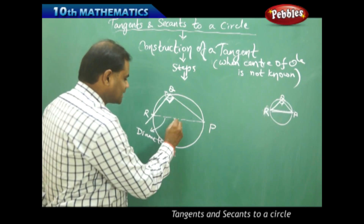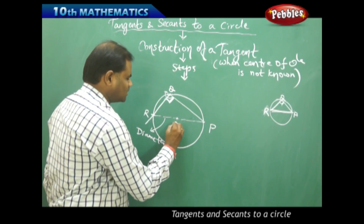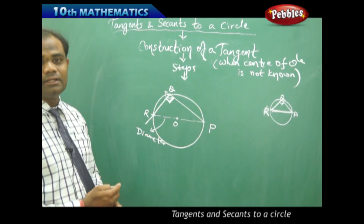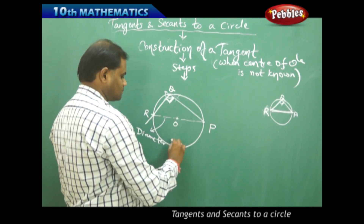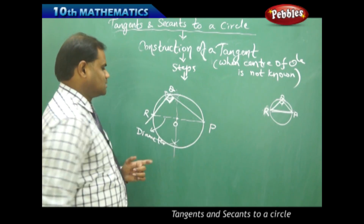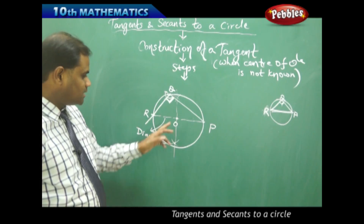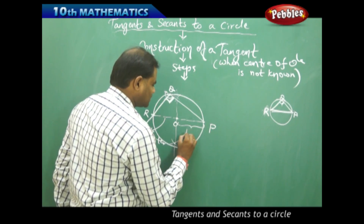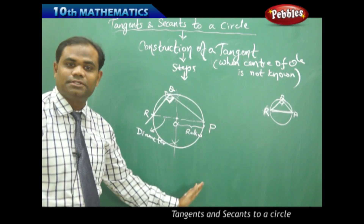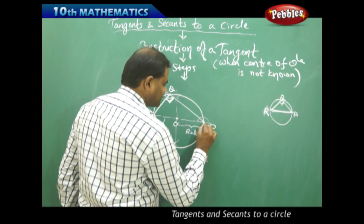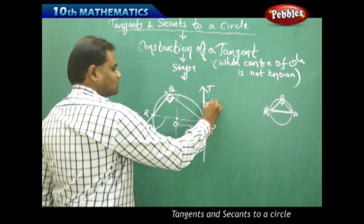Now, PR being the diameter, I find the exact middle of PR by taking more than half the measurement with a compass and constructing the perpendicular bisector. This gives me the center of the circle, which I call V. With center V known, VP is the radius. From this radius I can construct the tangent — placing the protractor at P and measuring 90 degrees gives me the tangent line to the circle.